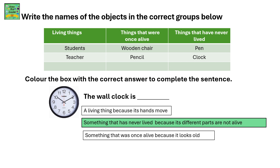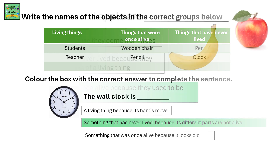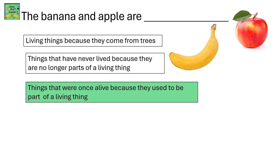Color the box with the correct answer to complete the sentence. The wall clock is something that has never lived, because its different parts are not alive. The banana and apple are things that were once alive because they used to be part of a living thing — the living thing was a plant.